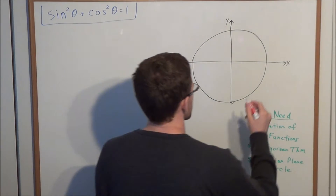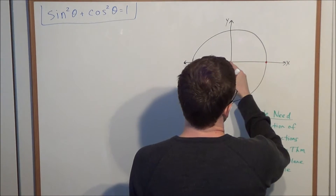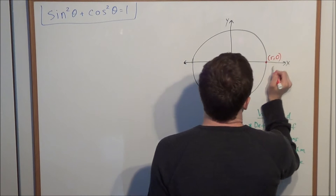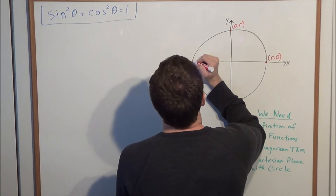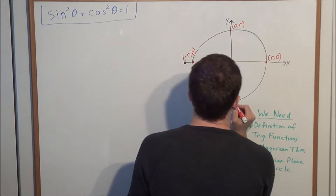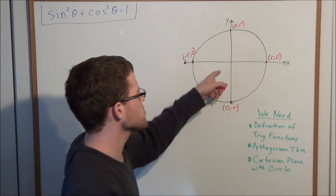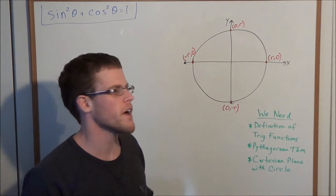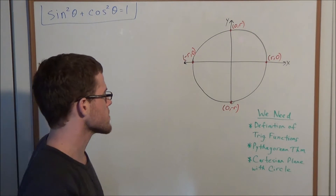We'll center it at the origin and give it a radius of r. If it has a radius of r centered at the origin, we could extend to the right r and go up 0. This point would be (0, r), this point would be (-r, 0), and finally we could look at (0, -r). Now if we used the unit circle it would simplify the algebra, but we can generalize it for any circle just to show how powerful this identity is.